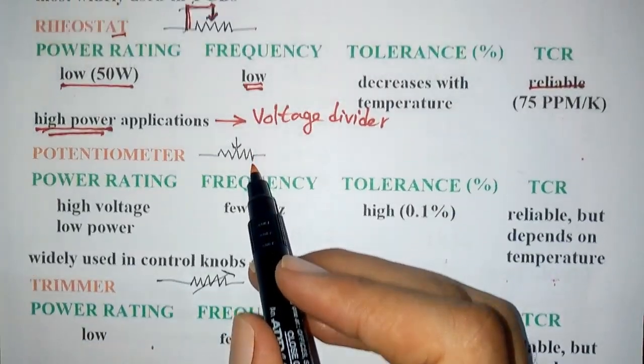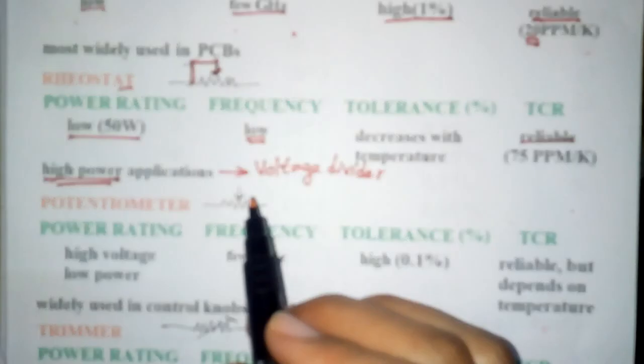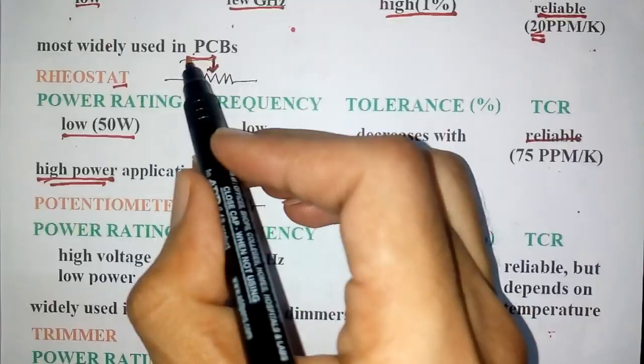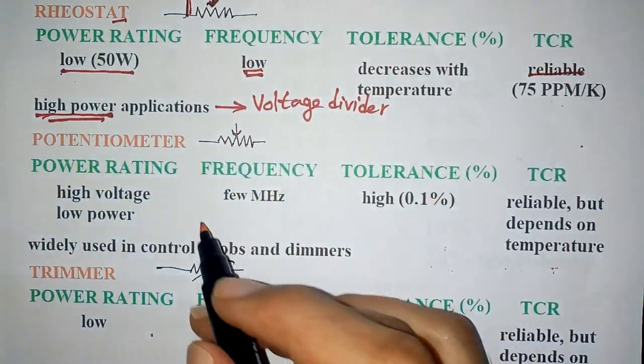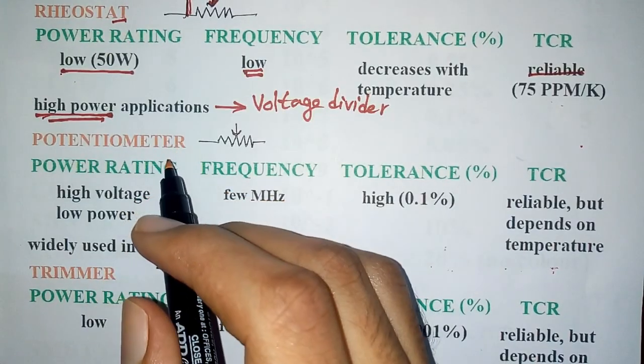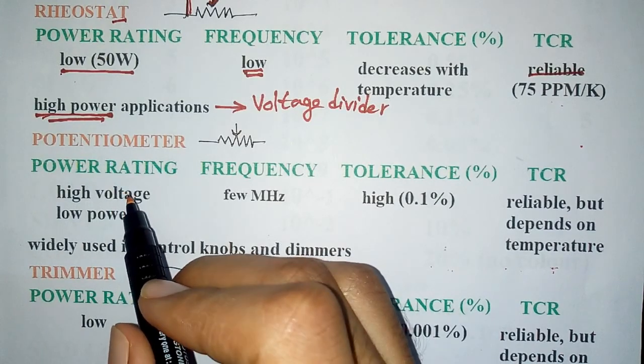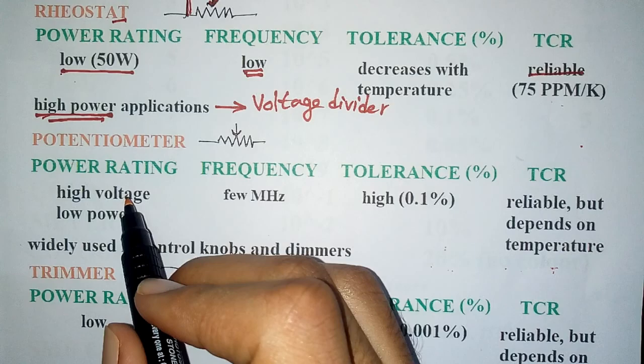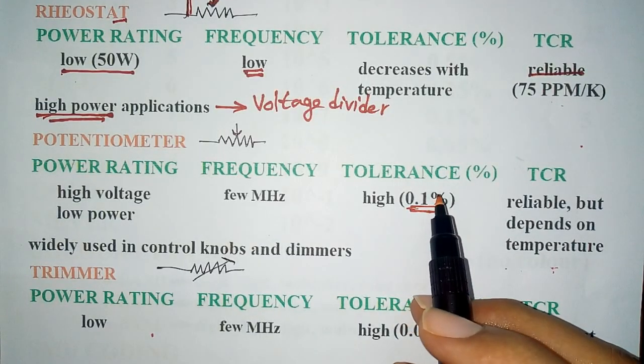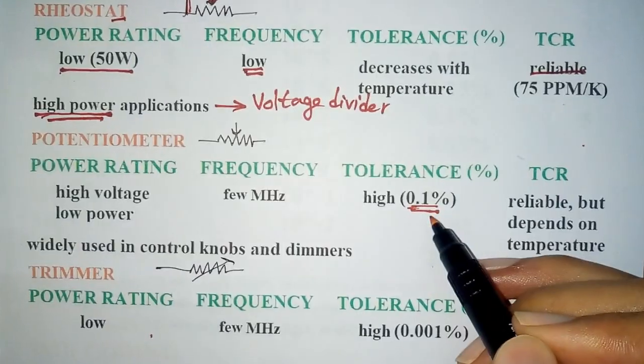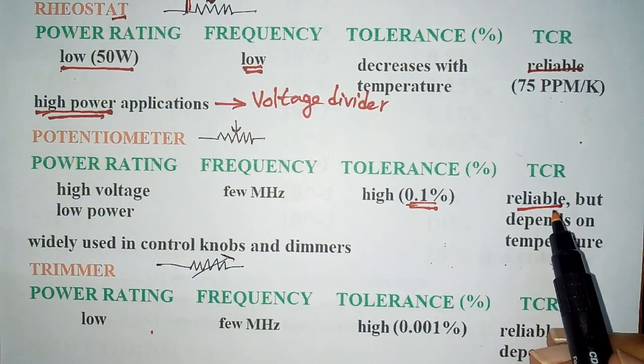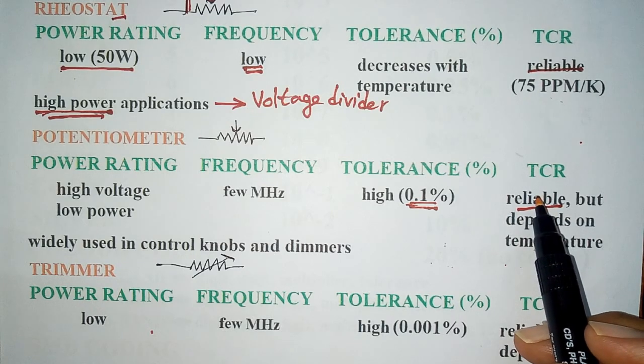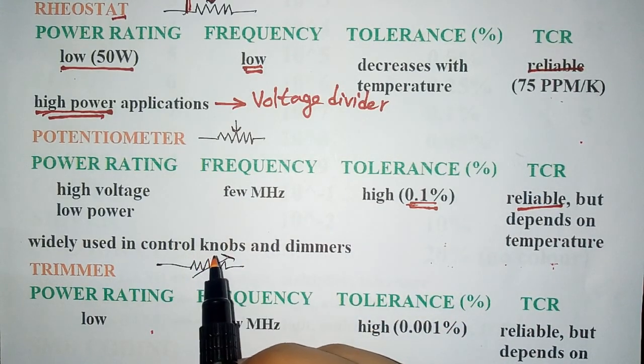Next is potentiometer. This is the symbol of rheostat and this is the symbol of potentiometer. Here the two leads are shorted; these are not shorted. It is a variable resistor with low power rating, but it can withstand very high voltage. It has high tolerance and its tolerance is not dependent on temperature. But its TCR value is dependent on temperature, though it is reliable. It is used widely in control knobs and dimmers.